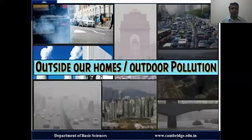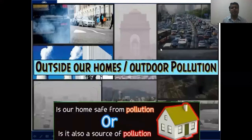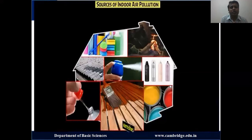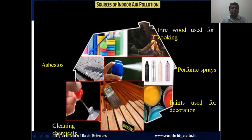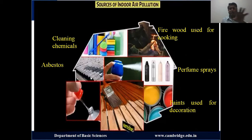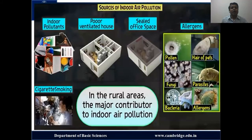So far we have seen outdoor air pollution. But if you ask whether our home is safe and free from pollution — no, it is also a source of pollution in many ways. Sources of indoor air pollution happening in our home include: firewood used for cooking, perfume sprays or insect-killing sprays, paints and varnishes used for decorative purposes, asbestos sheets used for roofing, and cleaning material chemicals used for domestic purposes.